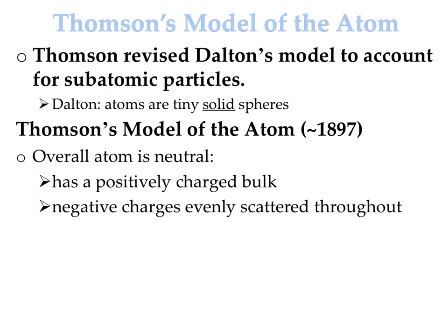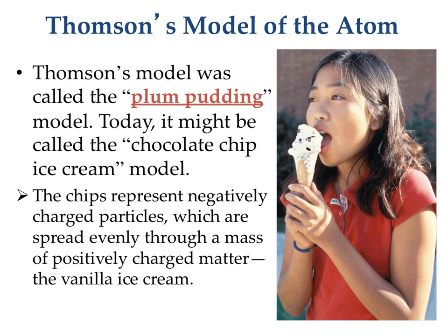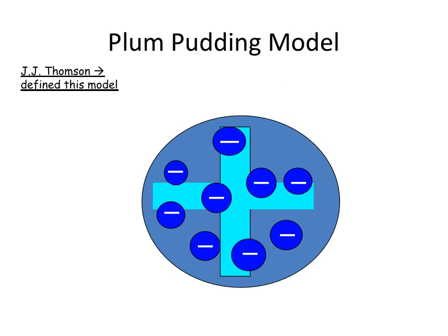Next comes Thomson and his model of the atom. He revised Dalton's model because he figured out that overall the atom is neutral, but that there are negative and positive parts within. He knew the positive part is the big bulk of the atom, and that the negatives can be removed and traded out, so he thought of them as just scattered throughout. We historically call Thomson's model the plum pudding model, though today it might be easier to call it the chocolate chip ice cream model — the ice cream is a big positive blob with little negatively charged chips dispersed throughout.